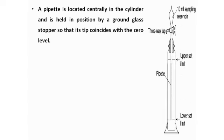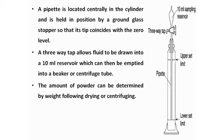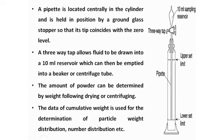A pipette is located centrally in the cylinder and it is held in position by a ground glass stopper. The tip coincides with the zero level. A three-way tap allows the fluid to be drawn into the 10 ml reservoir which can be emptied into the beaker or centrifuge. The amount of the powder can be determined following drying and centrifuging. The data of the cumulative weight is used for determination of the particle weight distribution and number.